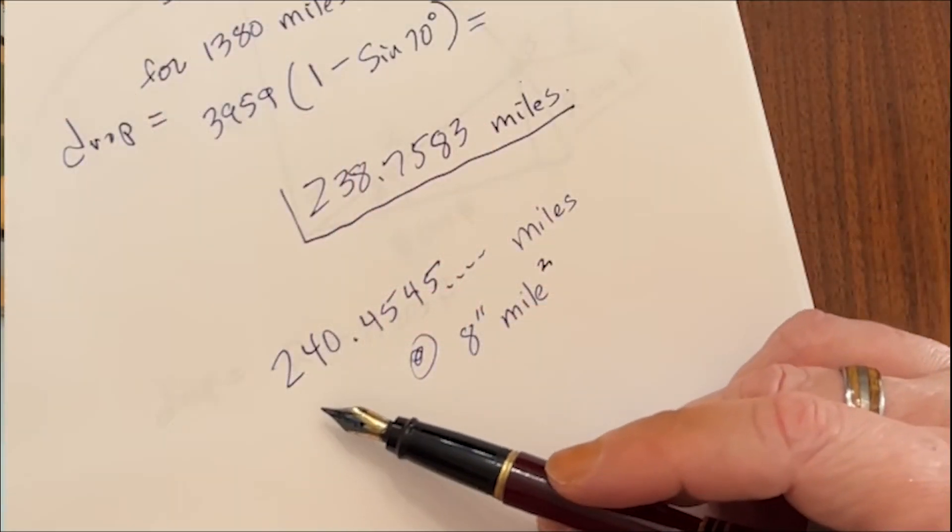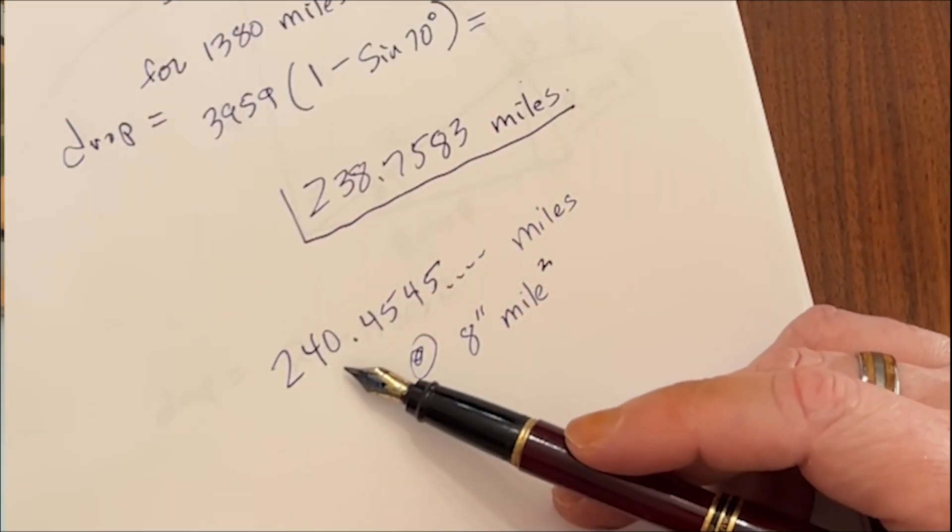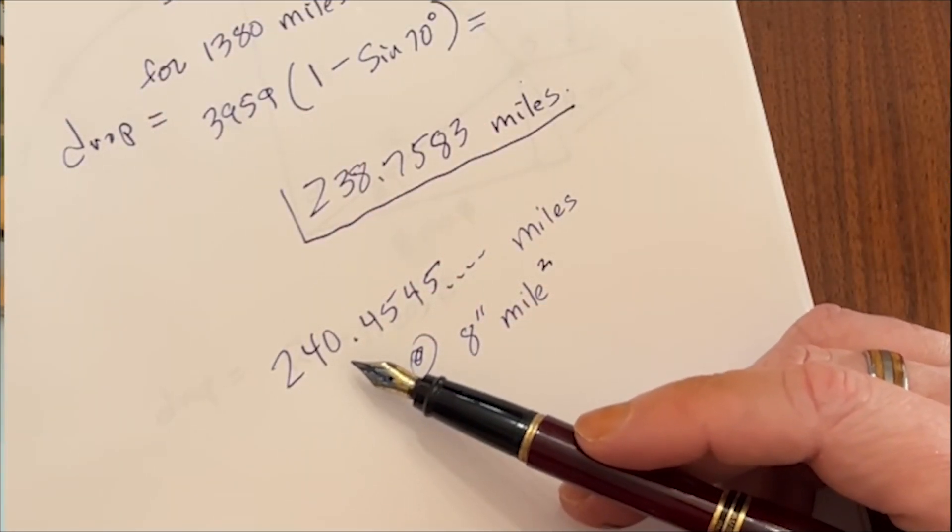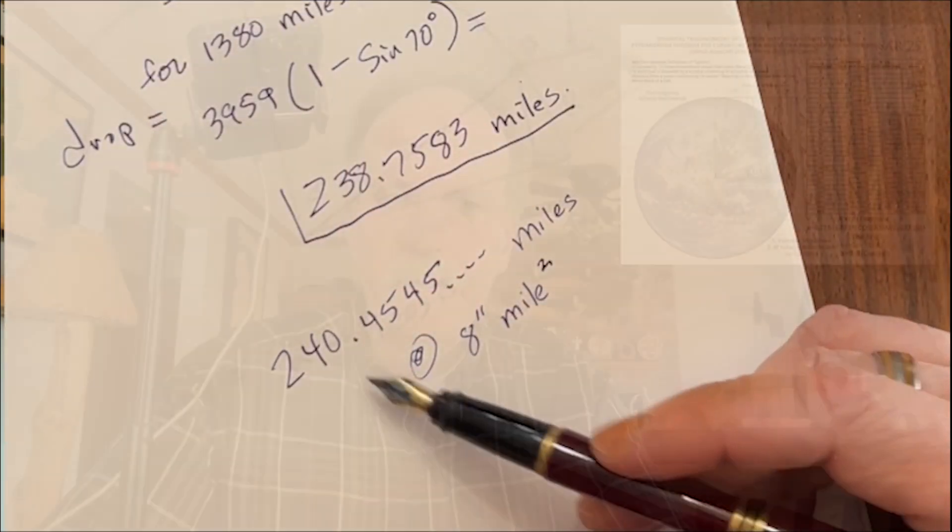How does that compare to 8 inches per mile squared over 1380 miles? That would be 8 inches times 1380 squared, divided by 12, then divided by 5280 to get the drop in miles. At 8 inches per mile squared it comes out to 240 miles — an error of only 2 miles. I don't know about you, but I find that pretty impressive.